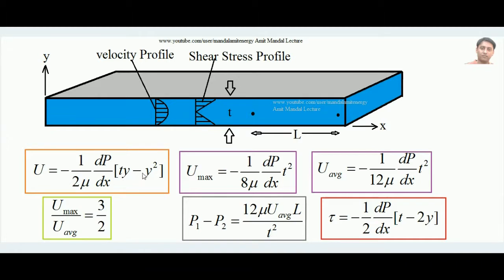Verification: at y = 0 (bottom plate surface), u = 0. At y = t (top plate surface), ty − y² = t² − t² = 0, so u = 0 as well. Both boundary conditions confirm zero velocity at each plate's inner surface.